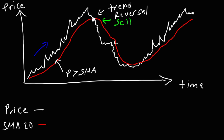In this region, the red curve is above the white curve, meaning the price of the stock is less than the SMA value — that indicates a downtrend. Now we have our next trend reversal where the red line crosses the white line again. This time it's a signal to buy, because the trend is about to reverse from a downtrend to an uptrend.